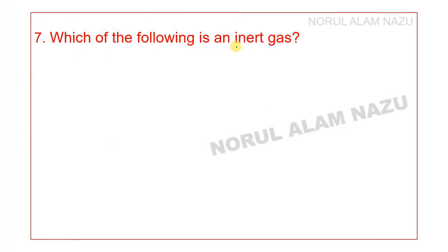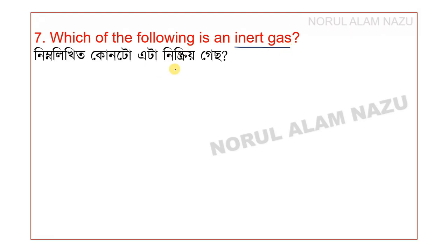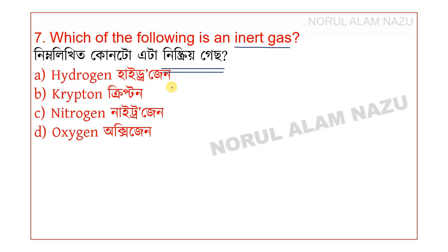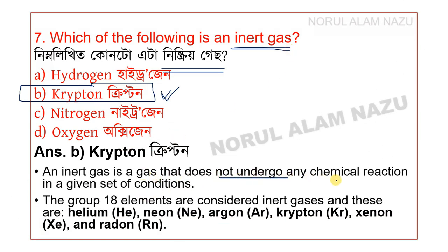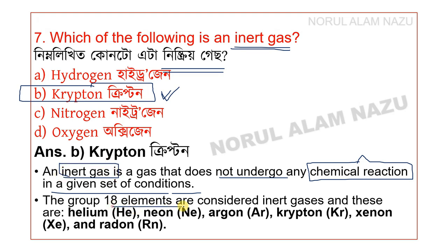Question number 7: Which of the following is an inert gas? Options are Hydrogen, Krypton, Nitrogen, and Oxygen. The answer is option B — Krypton. An inert gas is a gas that doesn't undergo any chemical reaction under any given set of conditions. The group 18 elements are considered inert gases.